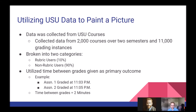Time between grades gives us the ability to look at how long between assignments instructors are spending — whether they're grading quickly or slowly — which gives us insight into what effects the rubric is having on their ability to grade efficiently. For example, an instructor sits down and grades the first assignment of the evening at 11:03 pm, then finishes the second assignment at 11:05 pm. The time between grades is then two minutes — that's the number we're looking at.